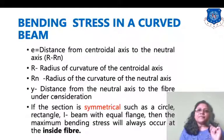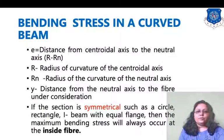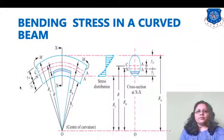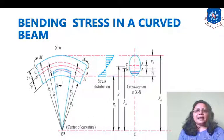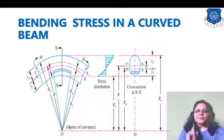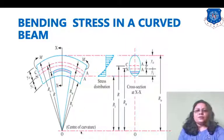A diagram is shown to illustrate the notation: y, rn, r, and M. In the diagram for a curved beam, the dotted line represents the center of curvature. The blue line indicates the cross-section being studied. Here an elliptical section is considered, and O is the center of curvature.